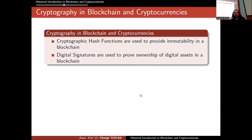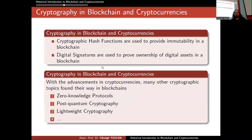Cryptographic hash functions are used to provide immutability in a blockchain, and digital signatures are used to prove ownership of digital assets. This is how cryptography is used here — this was the initial approach in Bitcoin, but since 14 years have passed, many other areas have found themselves in this topic. Different areas of cryptography are also now used in blockchains and cryptocurrencies.